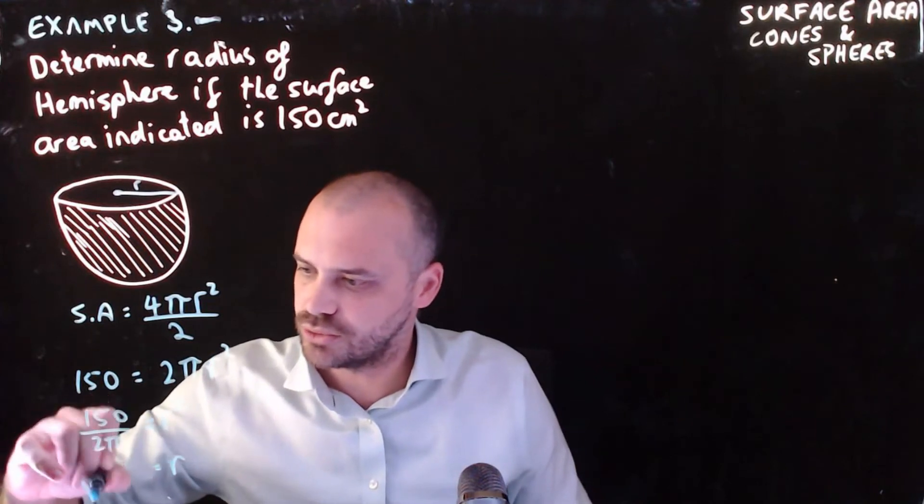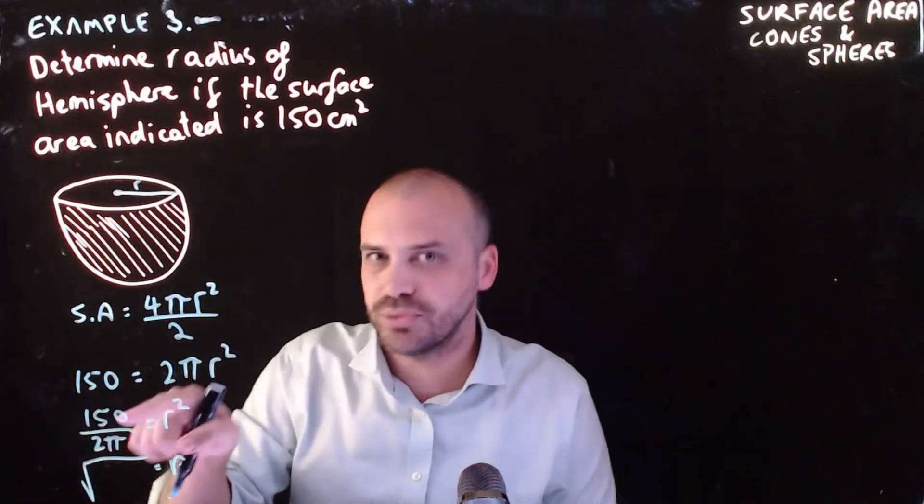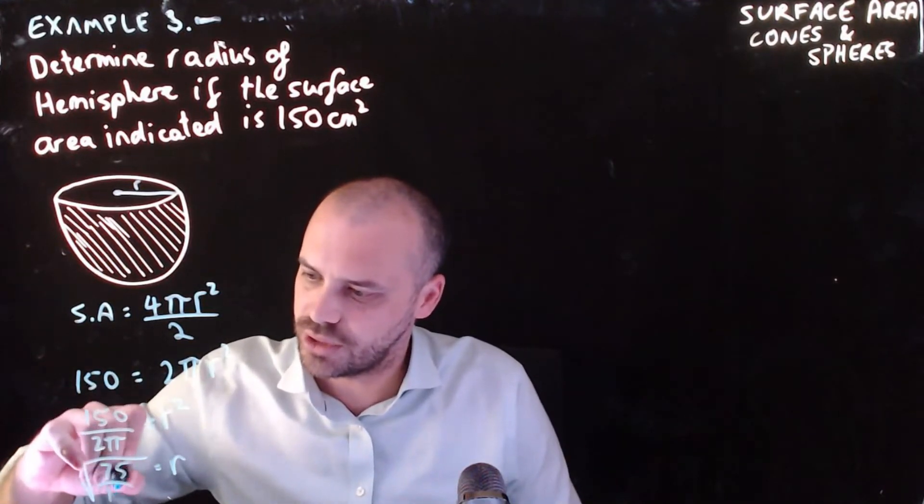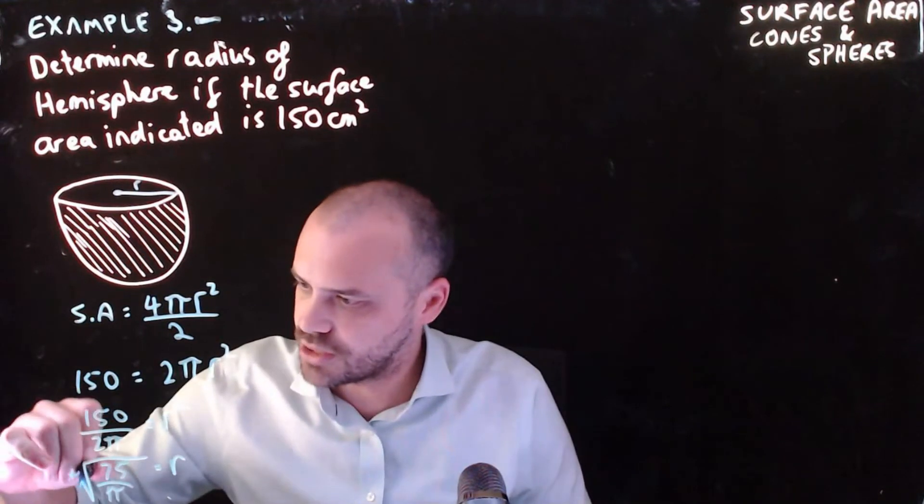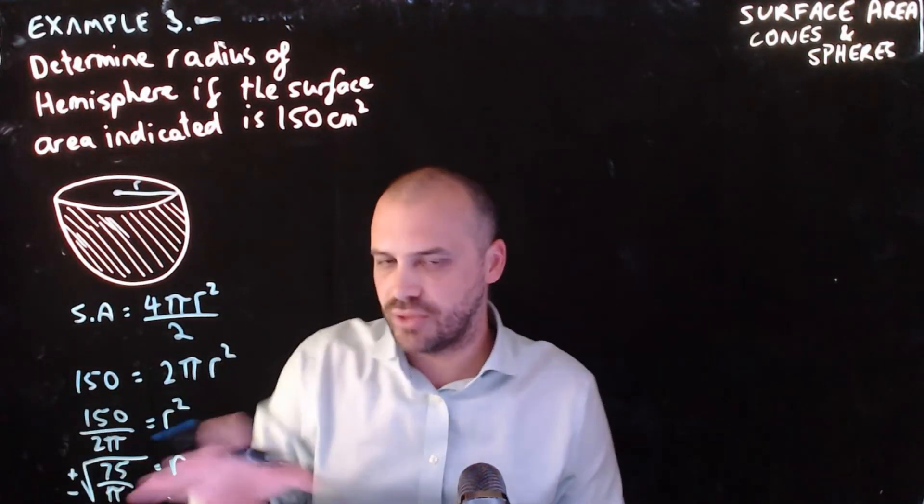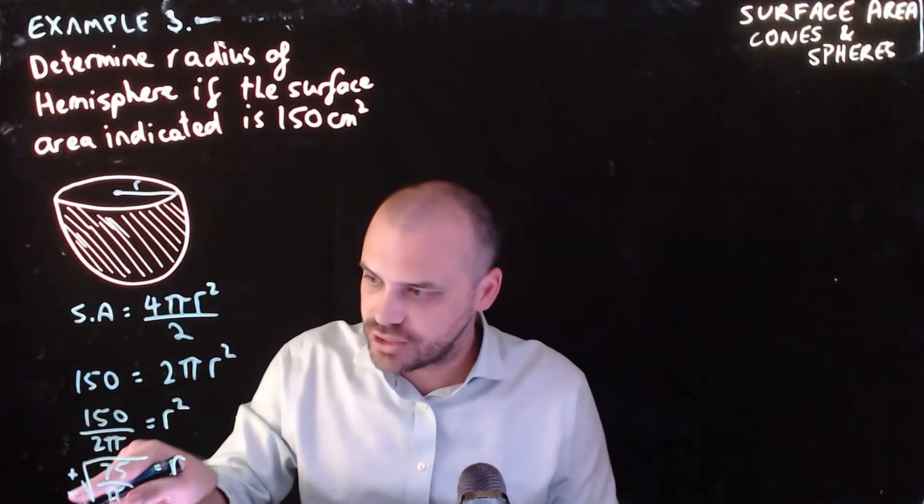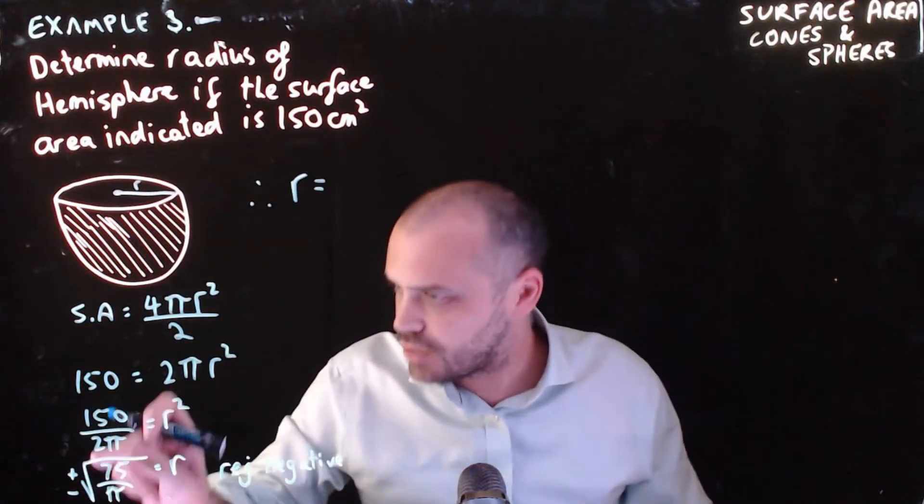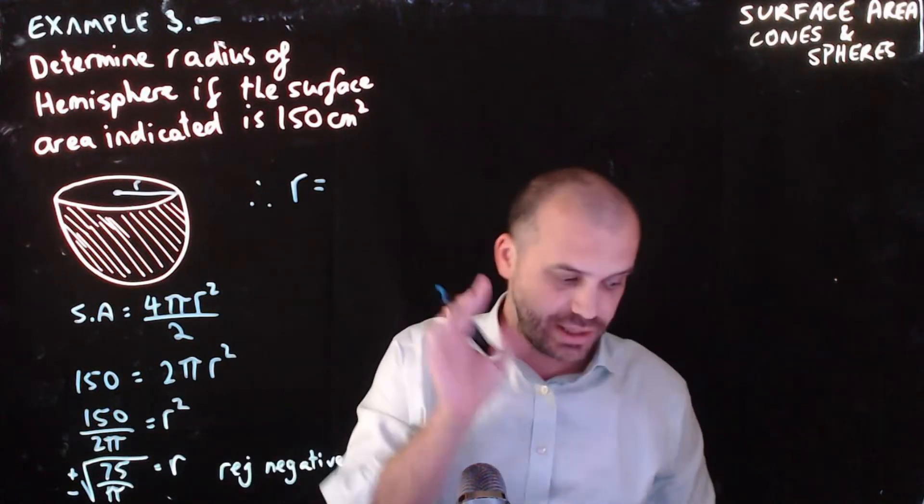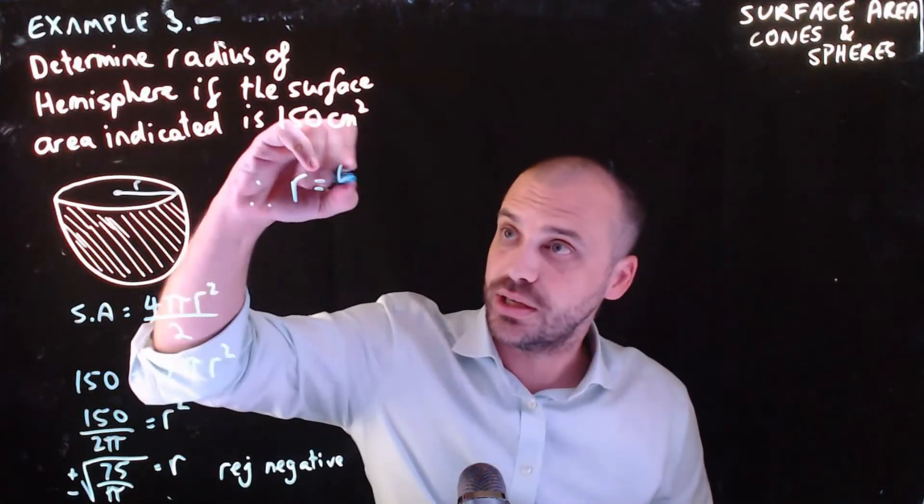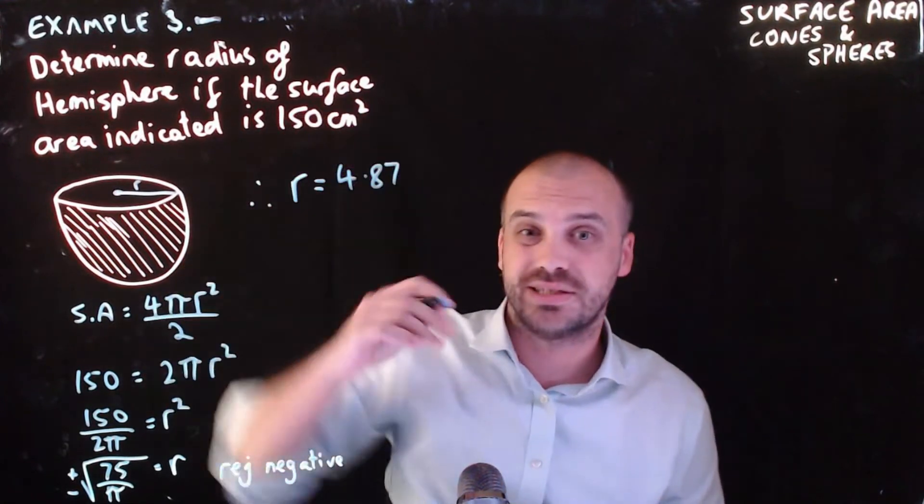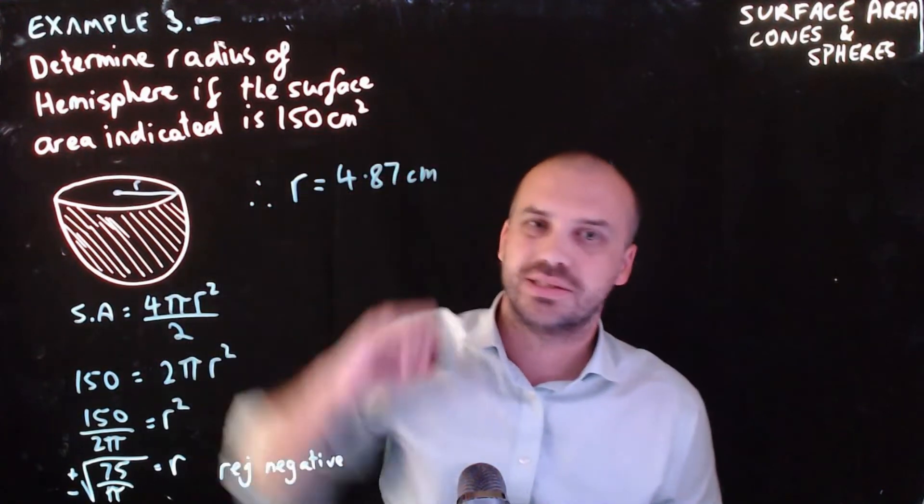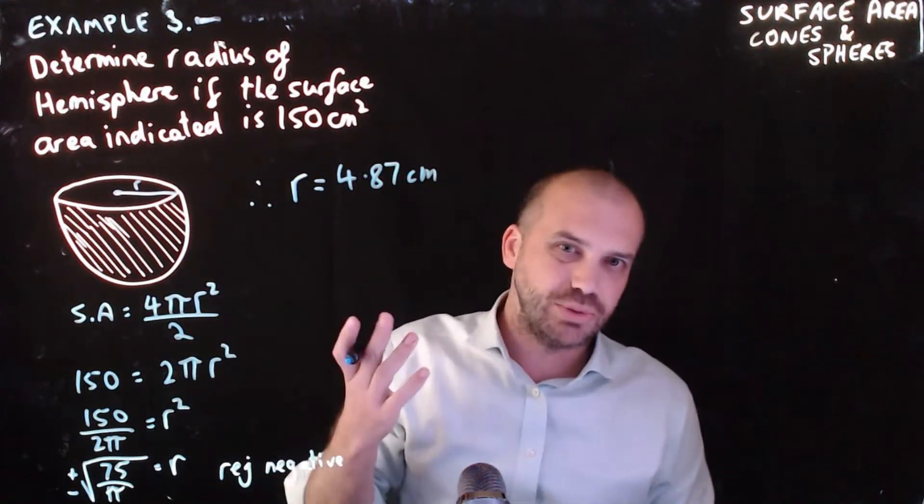So r is going to be equal to the square root, I'm just going to simplify this. 150 divided by 2 pi, that's the same as 75 divided by pi. Now, I need a little plus minus here because I'm square rooting that. But I can reject the negative answer because a radius isn't going to be negative. So if you type square root of 75 divided by pi into your calculator, you're going to get 4.87. This is centimetres squared, so the radius must be in centimetres. And that's to two decimal places, of course.